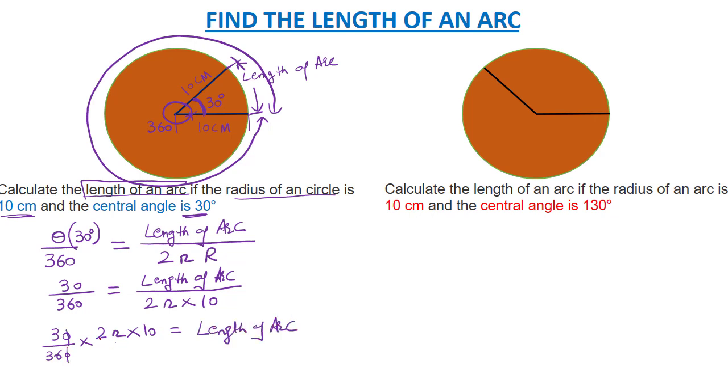After simplifying, I am left with 5π/3. This is 5 times 3.14 (the value of π) divided by 3, which equals 5.23 centimeters.